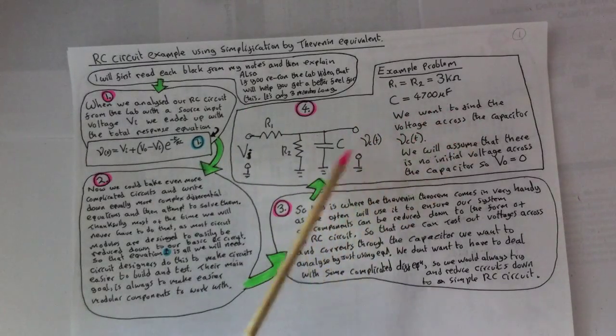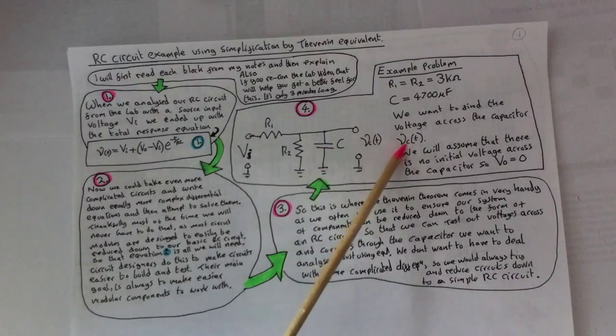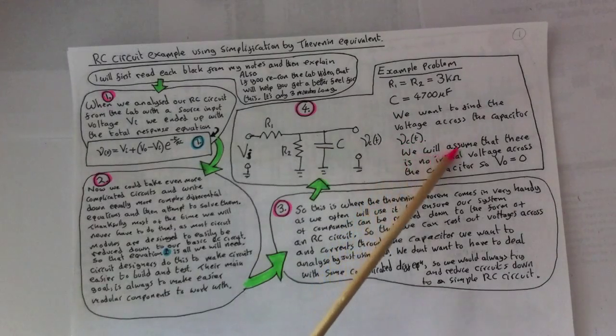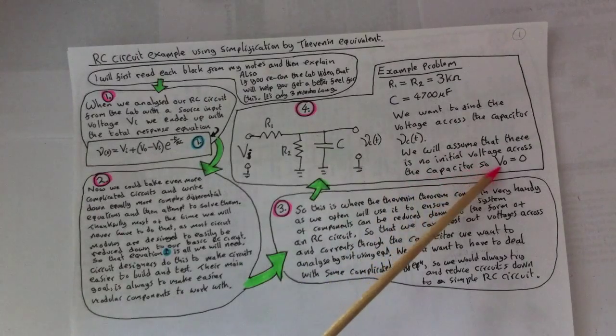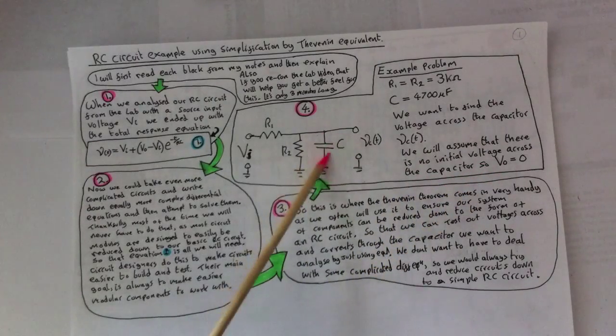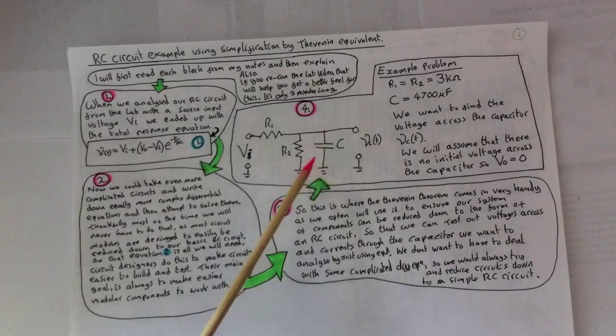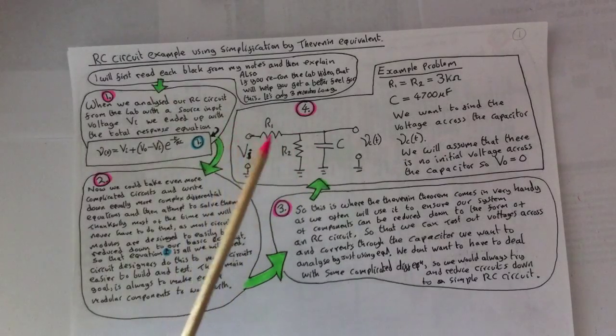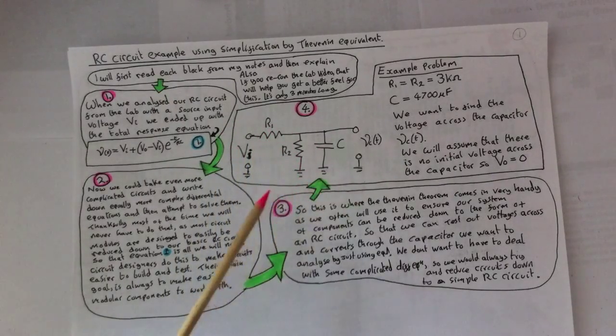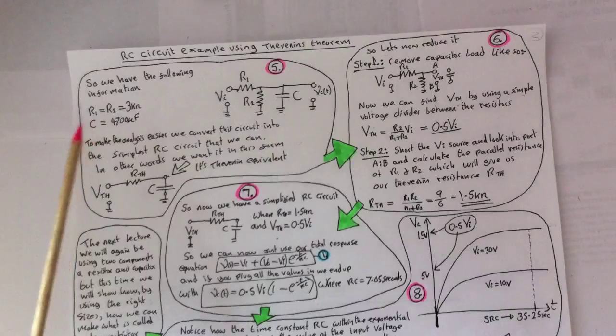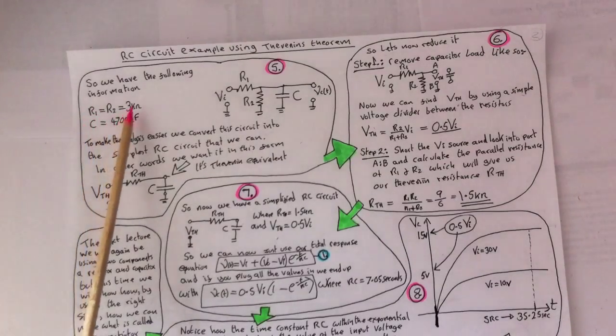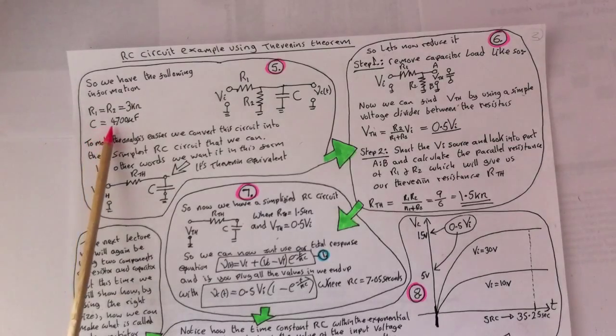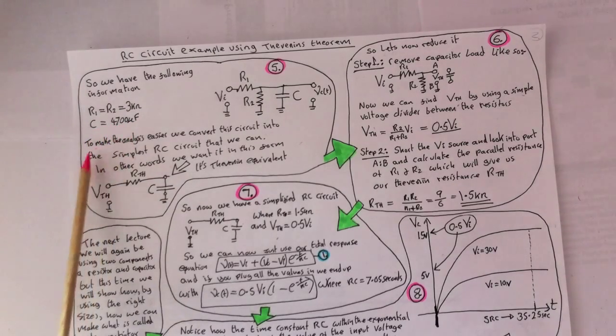We want to find the voltage across the capacitor, which we'll call VC(t). We'll assume that there is no initial voltage across the capacitor, so the initial voltage is zero. So when we switch on, there's actually no voltage across there to begin with, which is probably the usual way when you just switch on a circuit. So we have the following information: R1 equals R2, three kilo ohms. The capacitor equals 4,700 microfarads.